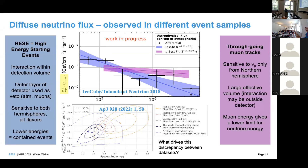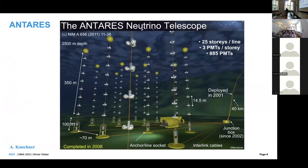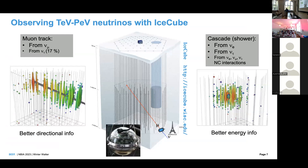The through-going muon analysis has high sensitivity at high energies. The only problem is that for muon tracks you may only get a lower limit on the neutrino energy, because the muon may leave the detector or start outside it. So the energy cannot be as well measured as in the contained-event case.